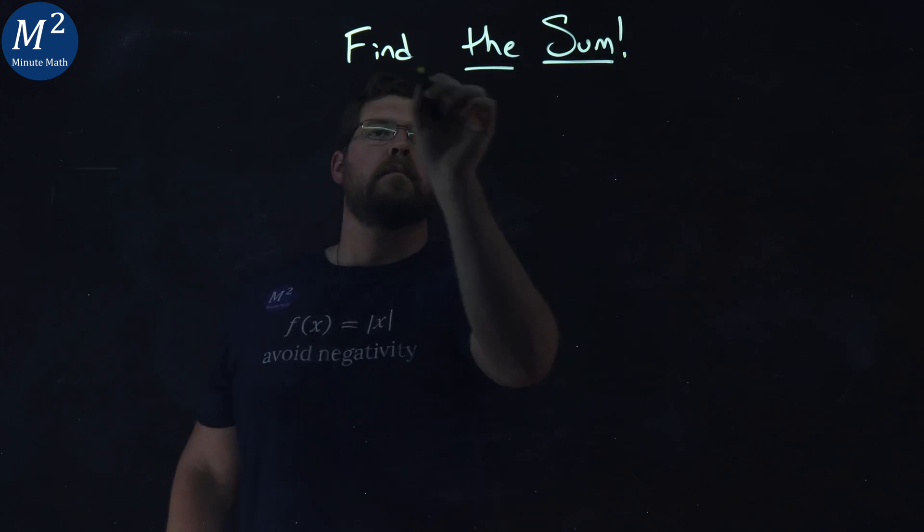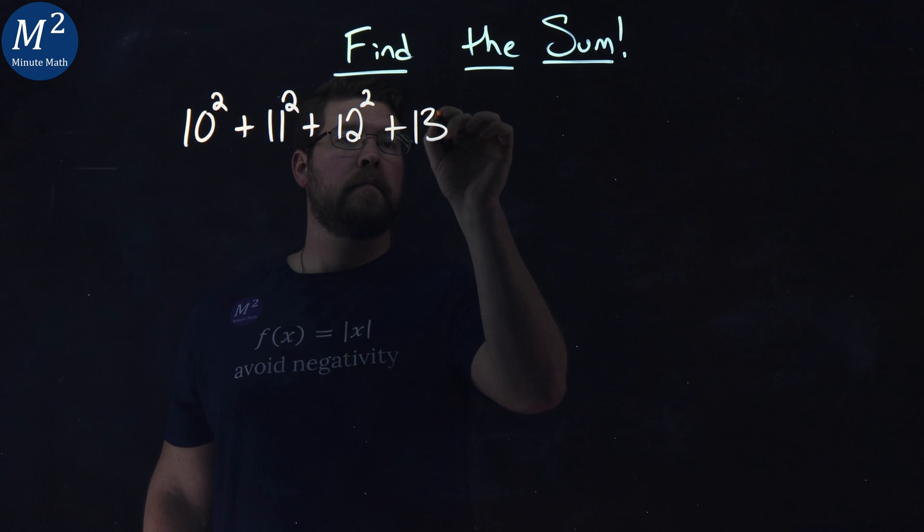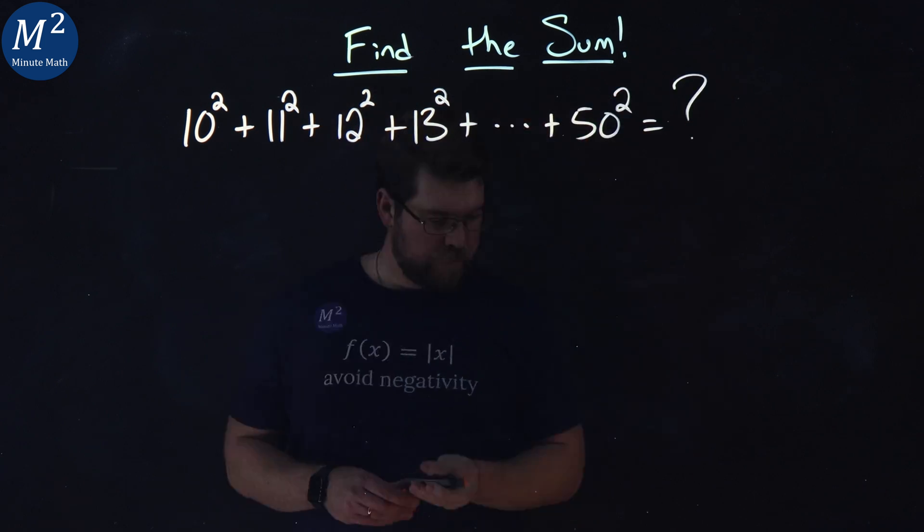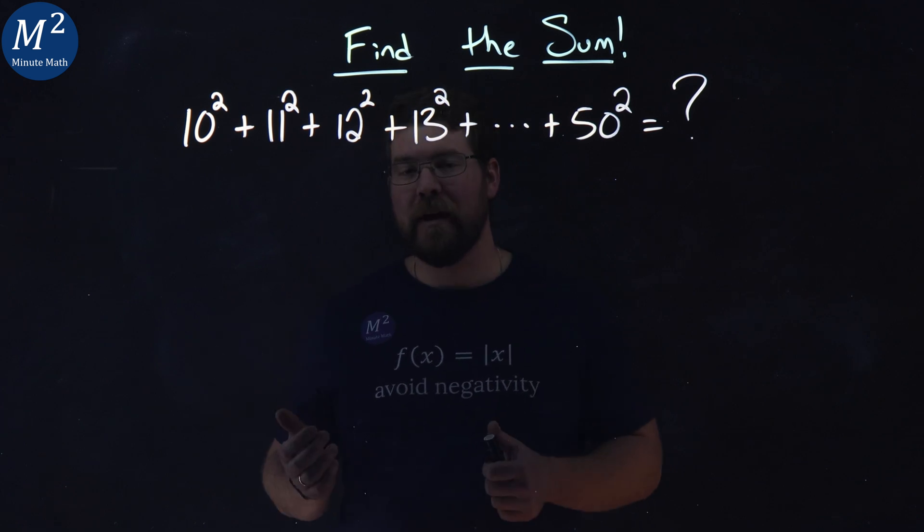Find the sum. We have 10 squared plus 11 squared plus 12 squared all the way up to 50 squared. We're adding it up. What is the answer? Pause this video, see if you can come up with the answer.